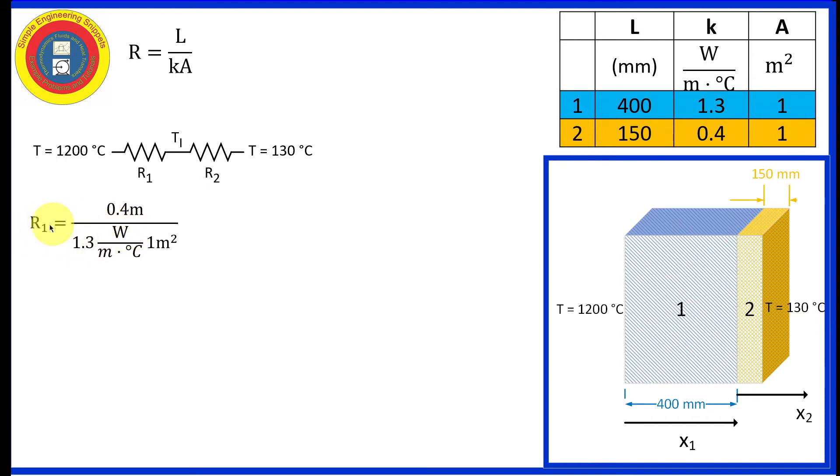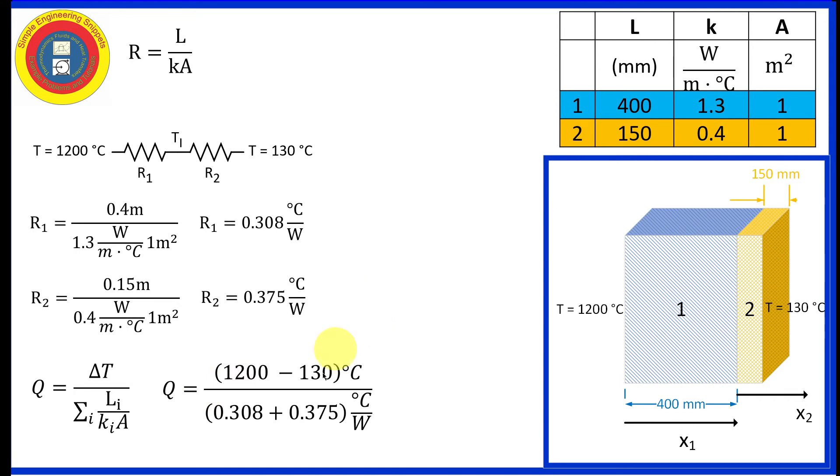Let's go ahead and calculate the resistance for slab one: 0.308 degrees Celsius per watt. Do a similar calculation for slab two, and we get 0.375 degrees Celsius per watt. And now let's substitute this into our Ohm's law for a thermal circuit. And notice in the denominator, we add the two series resistors. And we obtain that the heat flow is 1567.3 watts.